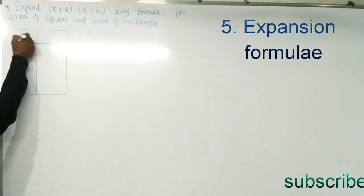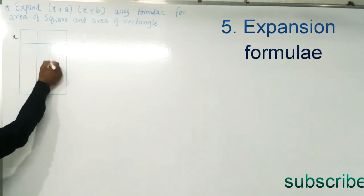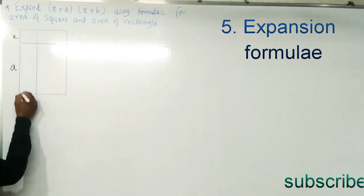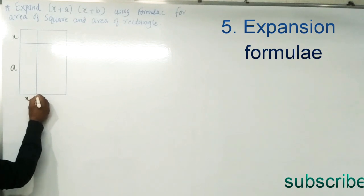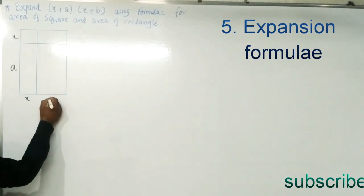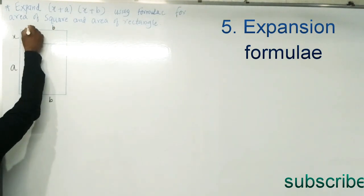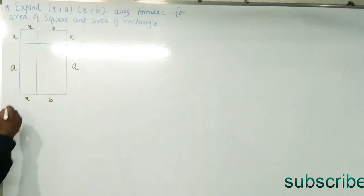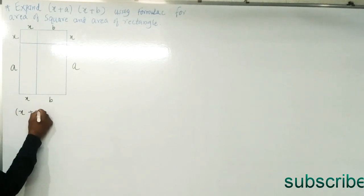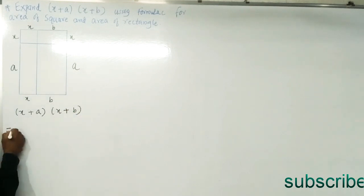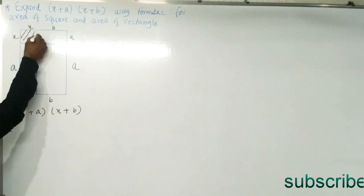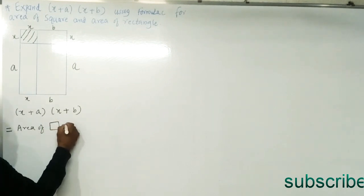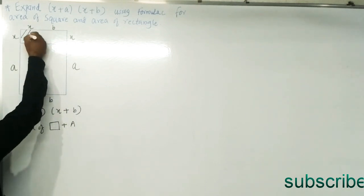Let the side of the square be x. The length of the first rectangle is a, and the length of the small rectangle is b. So here we have x, x, a, and b labeling the sides. The formula (x + a)(x + b) is equal to the area of the square plus the areas of the rectangles.